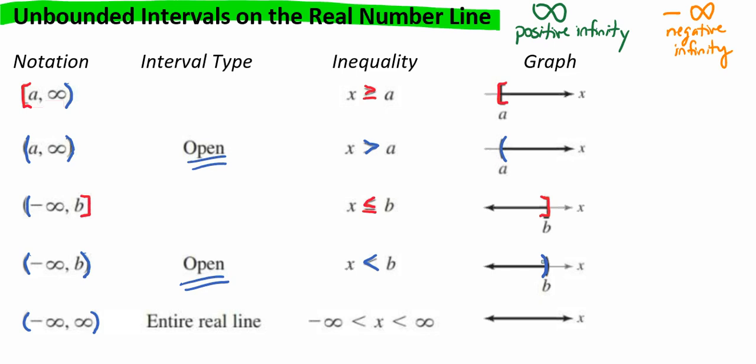If we have something like parentheses, negative infinity, comma, positive infinity, parentheses, this is something different — this represents the entire real number line. So we're going to say that negative infinity is less than x, which is less than infinity. There are no brackets or parentheses to put on that; it's literally just the entire real number line. Notice that when we're using an infinity symbol, it can never be a closed interval type. An interval is unbounded when it continues indefinitely in one or both directions.